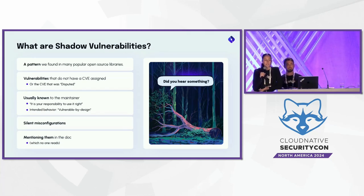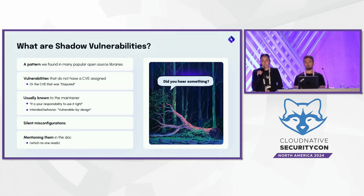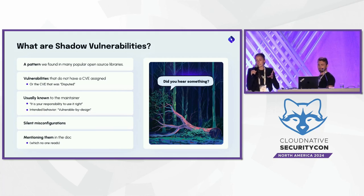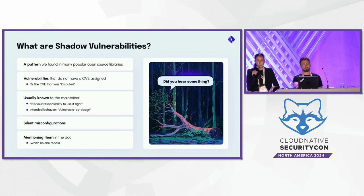We will also touch on a specific type of shadow vulnerability we call silent misconfigurations — where a library is configured in a way that exposes users to attacks. The interesting thing about shadow vulnerabilities is that they are actually usually documented in the library's documentation, but most of us, including me, just don't read the documentation before starting to use the library. That's where the problem starts.